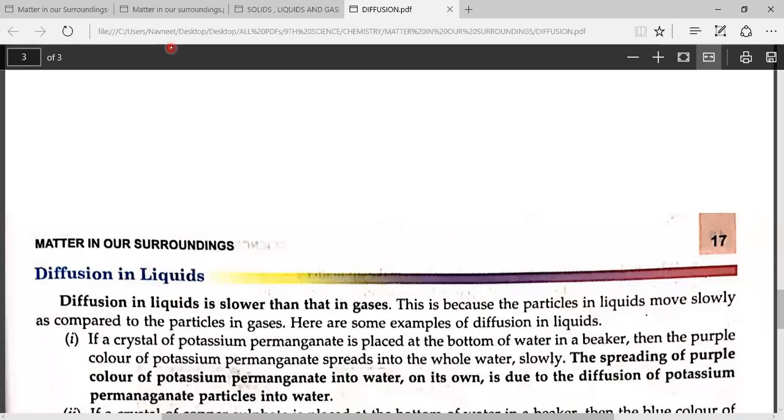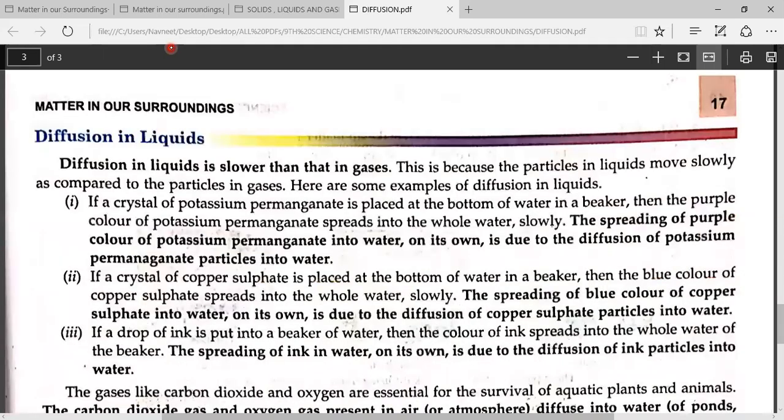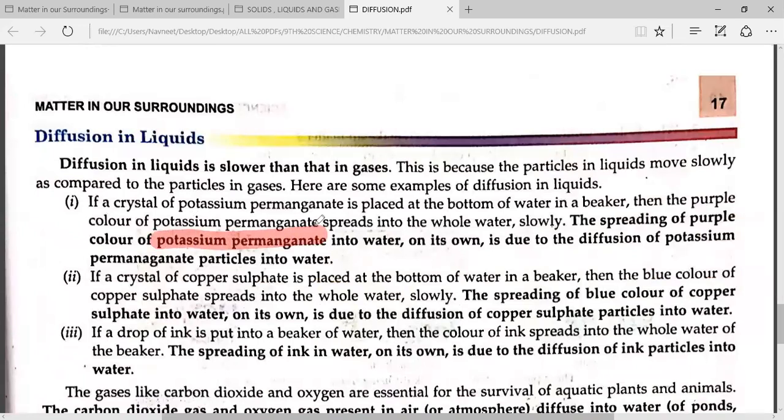Now you have some examples of liquids. You had done this before. You might remember potassium permanganate. But if you don't remember, then you can see the first lecture. Potassium permanganate is purple color. When you add it in water, all the water will become purple. That is also due to diffusion. Second, copper sulfate. Copper sulfate is blue color. When you add it in water, all the water will become blue. That is also due to diffusion.